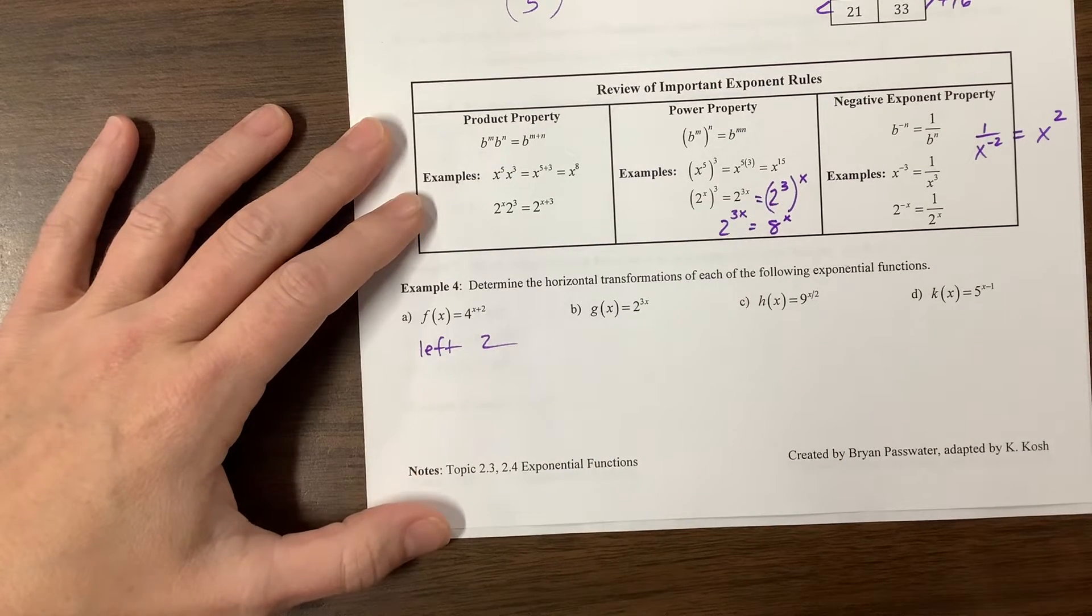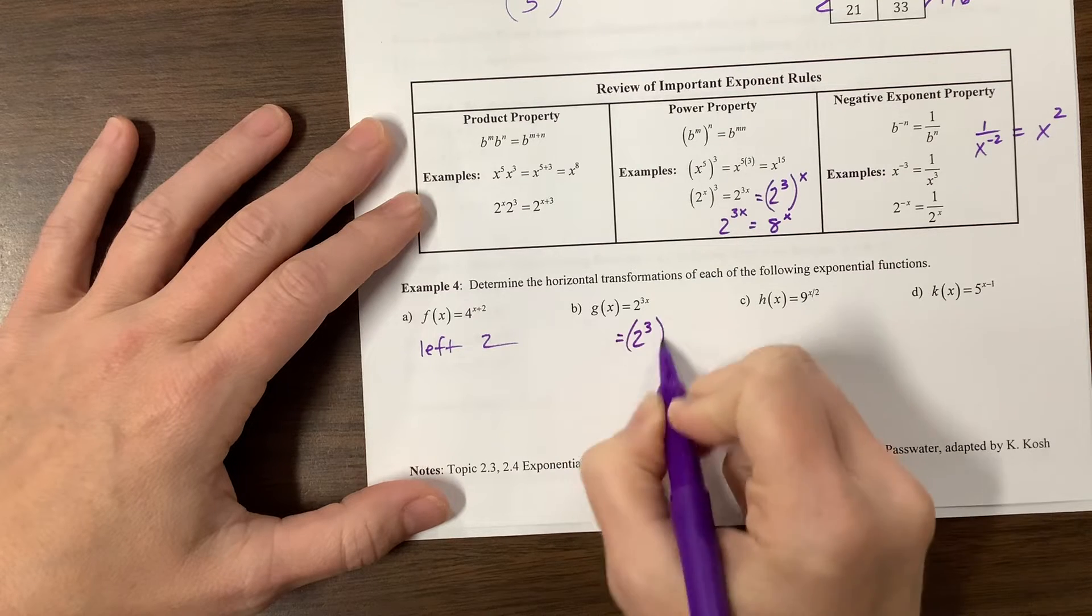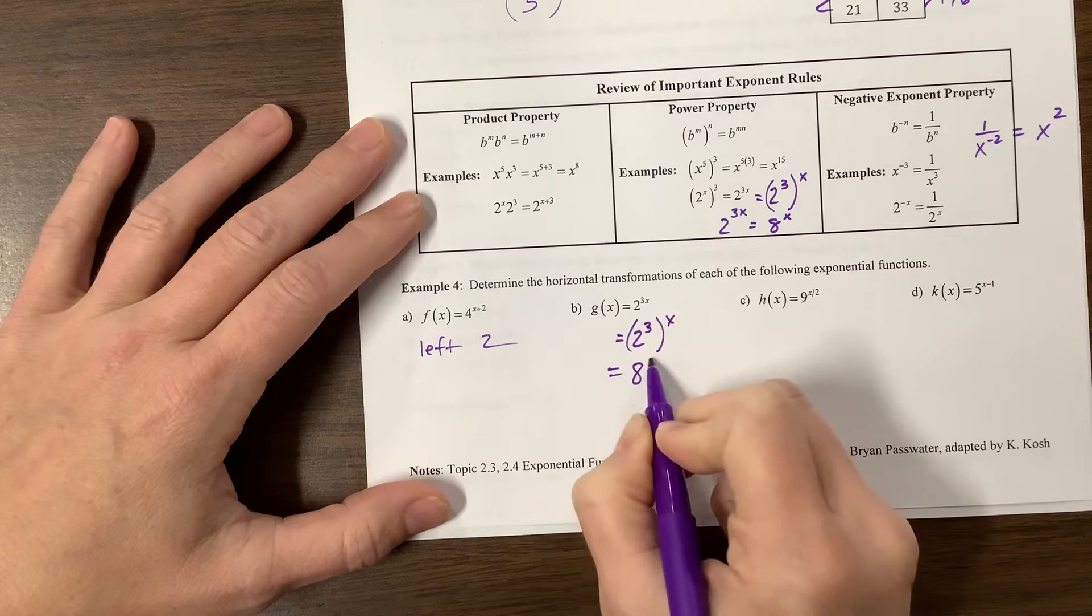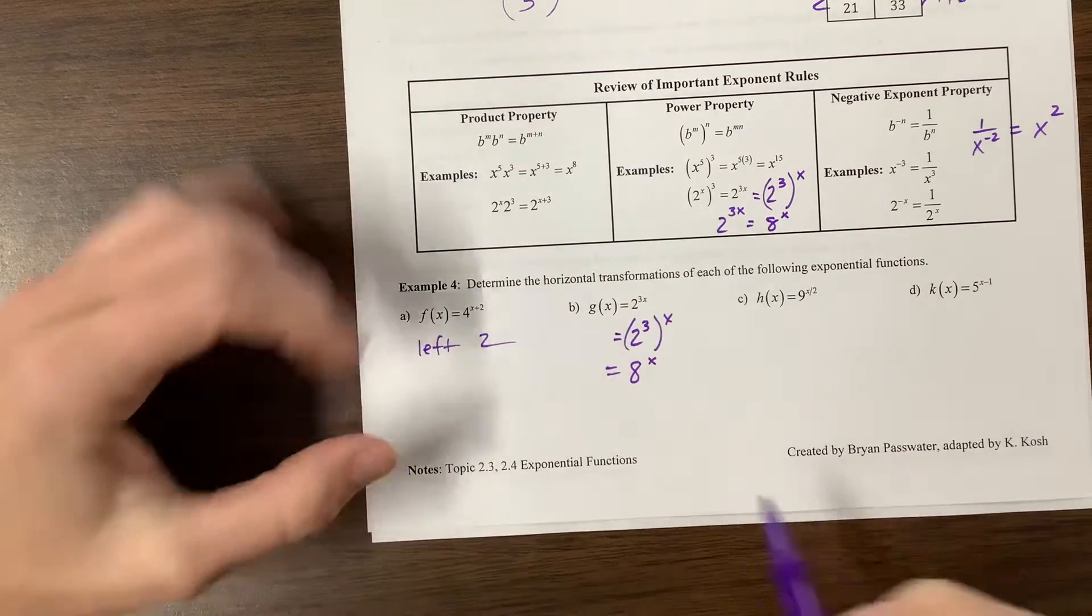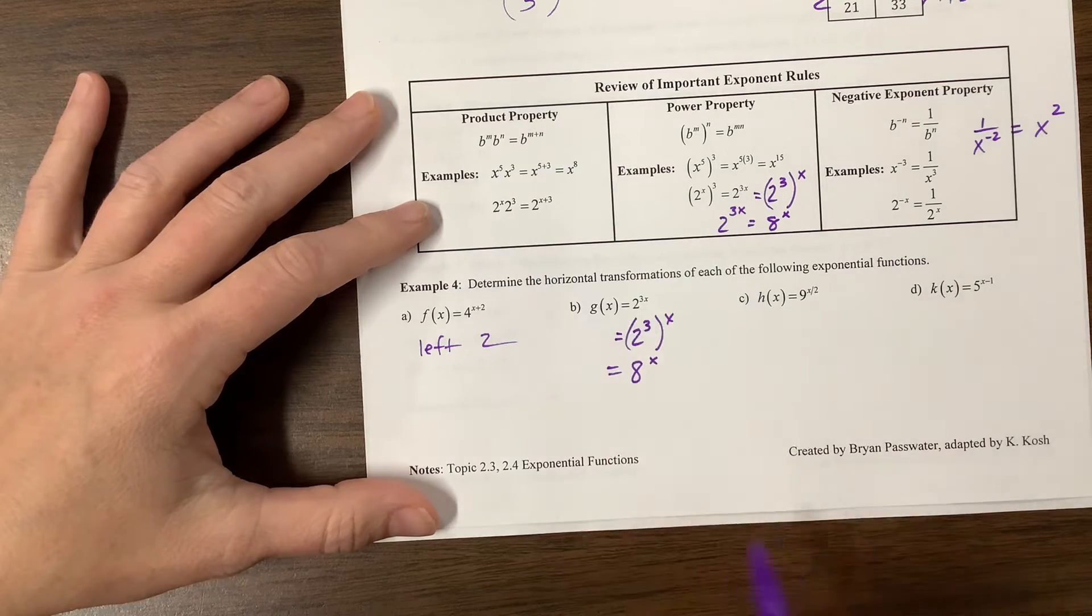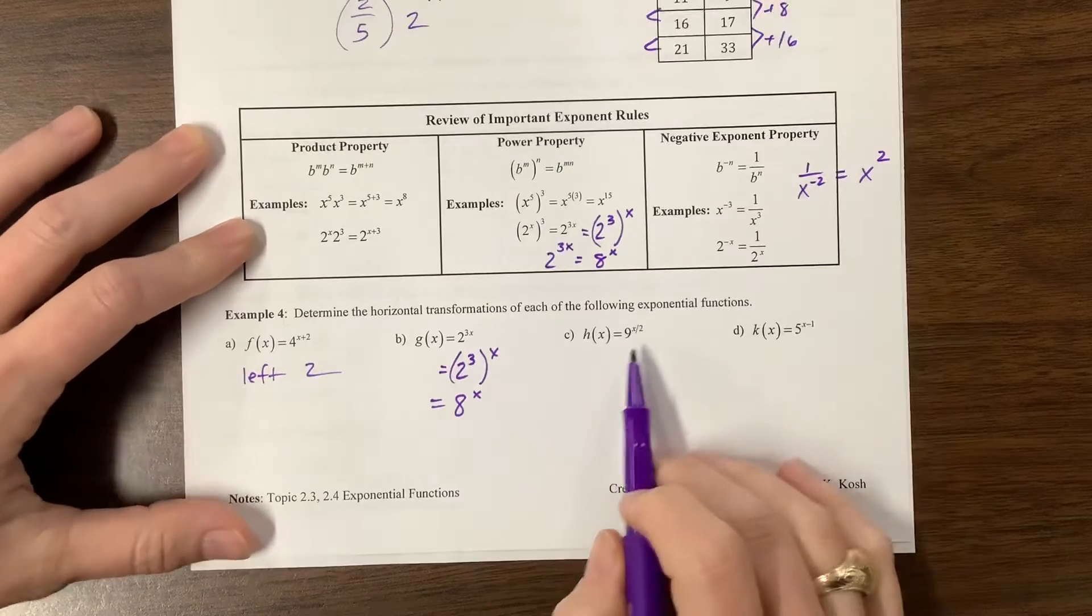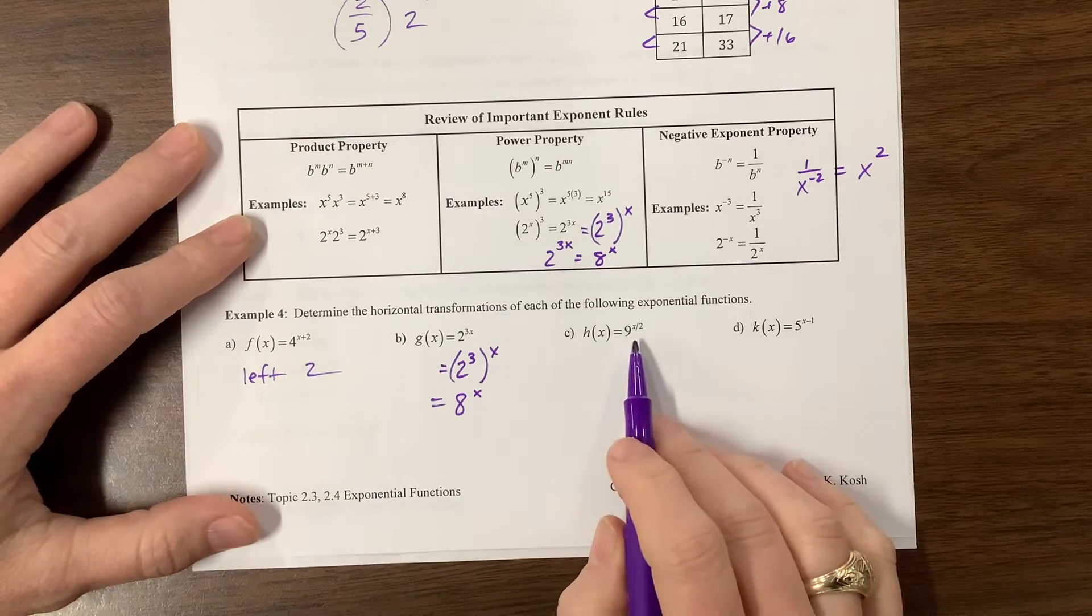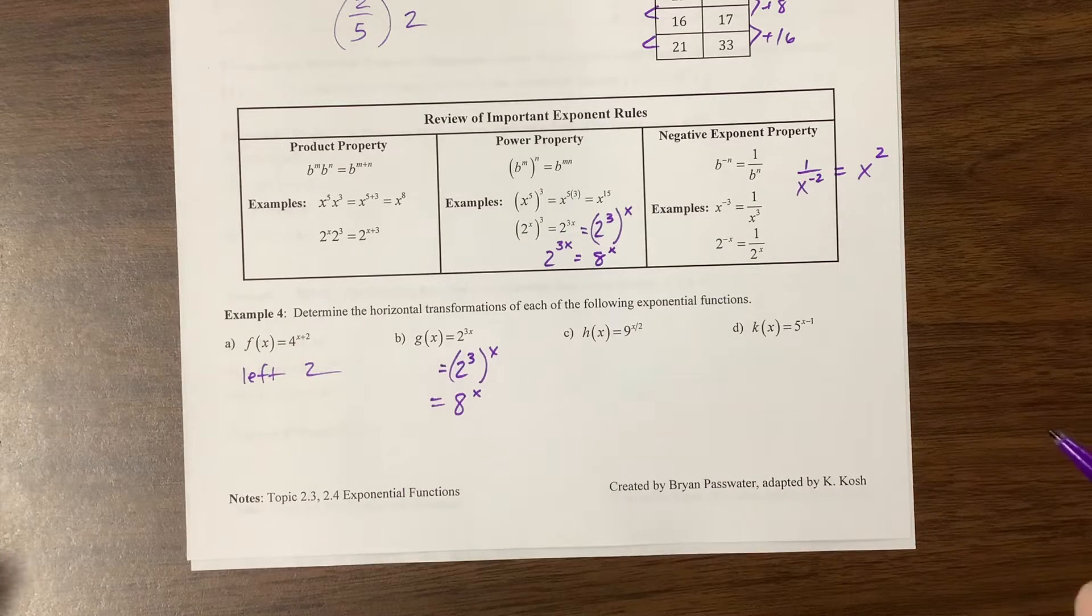This one, let's see, this is also going to be equivalent to 2^3 to the x, which we just talked about, which is 8^x. So it's a horizontal compression, but it's also a slightly different parent function. It goes up faster than that one. Anyway, I think I'm going a little too into the weeds.